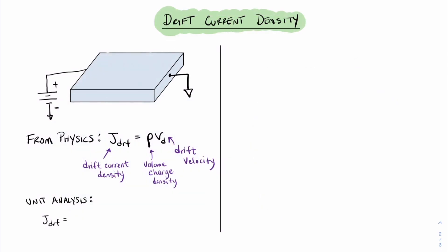Now let's move on to the math. We know from physics that drift current density J — we'll define J_drf as drift current — is equal to rho times the drift velocity, where rho is the volume charge density of the material. Breaking this down in terms of units: rho has units of coulombs per cubic centimeter, and drift velocity has units of centimeters per second.